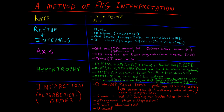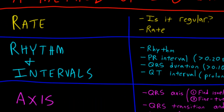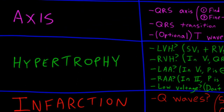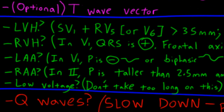This is the algorithm used each time I read an EKG. We've already covered rate, rhythm and intervals, axis and transition, and now we're going to talk about hypertrophy. For this step, I ask myself: are there signs of left ventricular hypertrophy, right ventricular hypertrophy, left atrial enlargement, right atrial enlargement, and are there signs of low voltage? These criteria are something you have to memorize in order to diagnose these findings on an EKG.